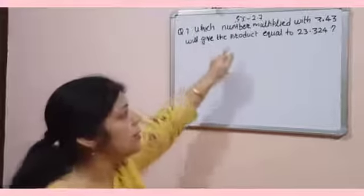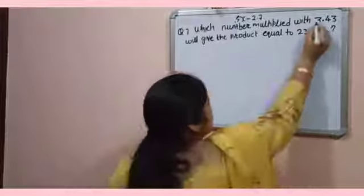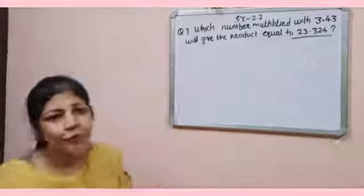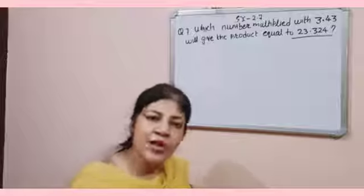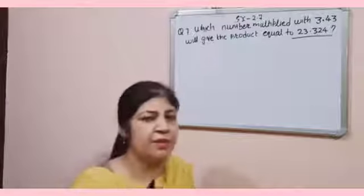Now our next problem is which number multiplied with 3.43 will give the product equal to 23.324. Now the product of two decimal numbers is given and one decimal number is given. You have to find another decimal number.